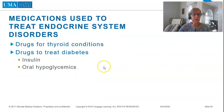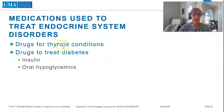Medications used to treat endocrine system disorders include drugs for thyroid conditions, drugs to treat diabetes, insulin, and oral hypoglycemics.